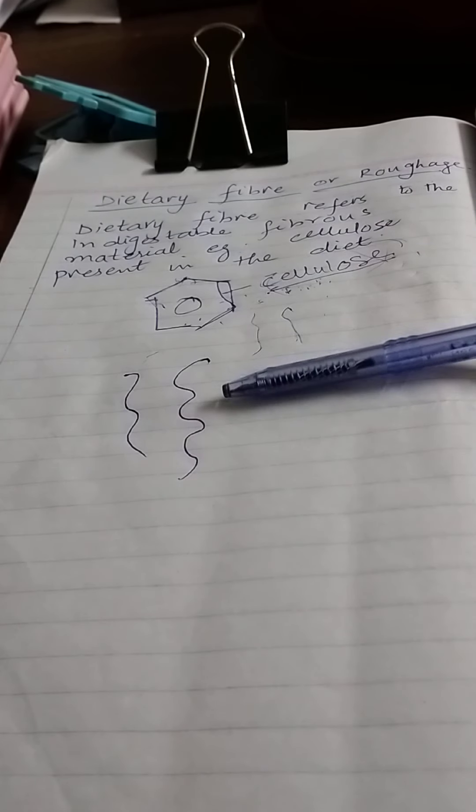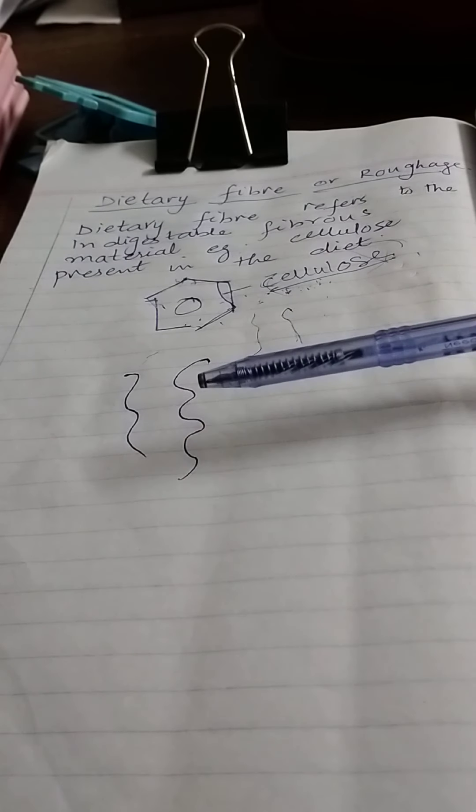Peristalsis is a series of wave-like muscular movements of the walls of the digestive tract. Such movements enable food to be mixed with the digestive juices. Because of this movement, digestive juices mix into our food, and at the same time, they cause the food to move along the digestive canal.